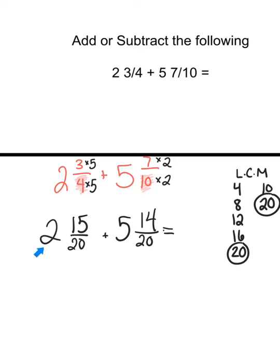Last, I just need to add. I can add my whole numbers first. 2 plus 5 gives me 7. Now to add 15 twentieths and 14 twentieths, now that my denominators are the same, I can just add my numerators. 15 plus 14 gives me 19, and my denominator remains the same. So 7 and 19 twentieths is my answer. All of this work here is supporting work that you can upload to go with this problem.